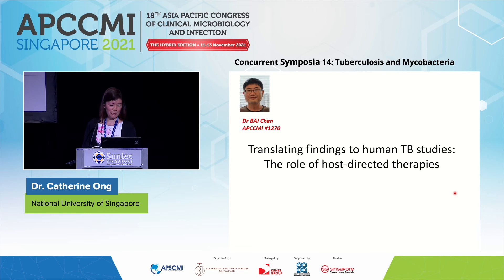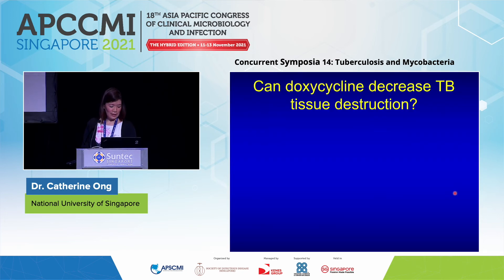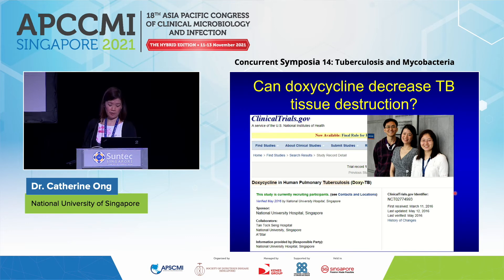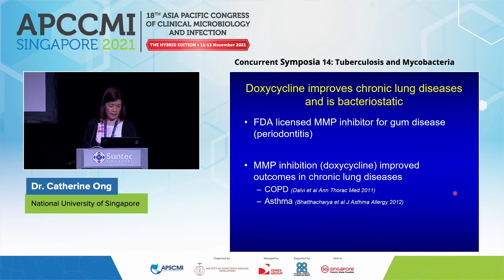Translating findings into human TB studies through host-directed therapy: Dr. Bai Chen has a poster on this. We asked whether doxycycline could decrease TB tissue destruction, given that it significantly decreases collagenase activity in MTB-infected neutrophils. Doxycycline is an MMP inhibitor for gum disease; in lung diseases such as COPD and asthma, it has been shown to improve outcomes. It is also bacteriostatic, and MTB growth measured by optical density decreases in a dose-dependent manner with doxycycline.